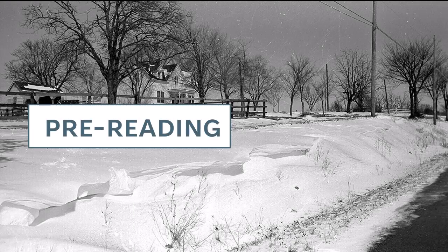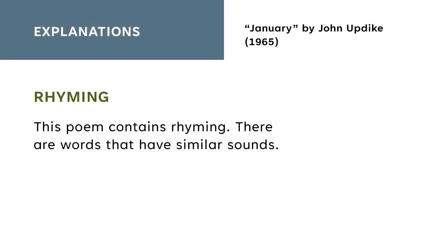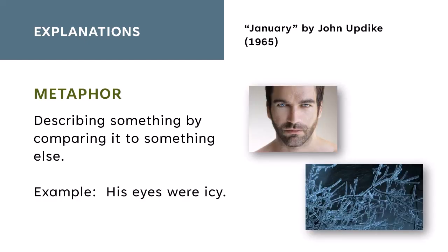Before we read the poem, let's review some important terms. This poem contains rhyming — there are words that have similar sounds, for example, C and B. When a writer uses a metaphor, they're describing something by comparing it to something else. For example, 'his eyes were icy.'